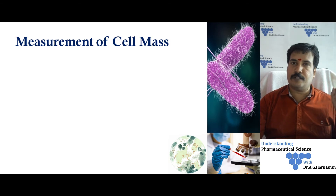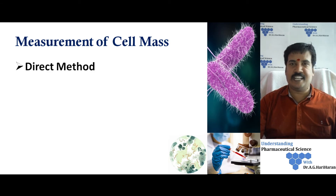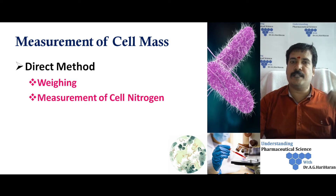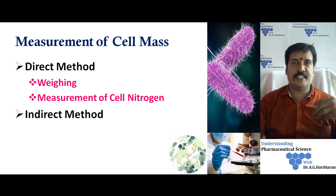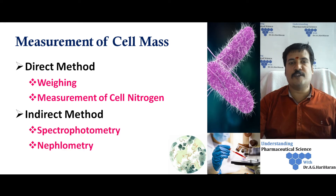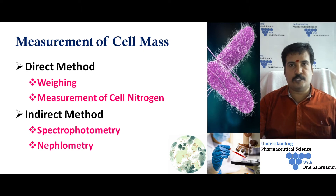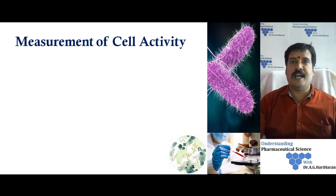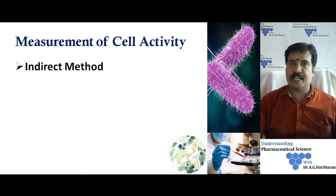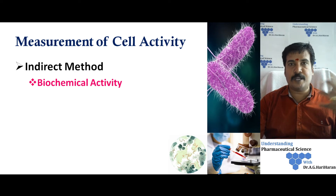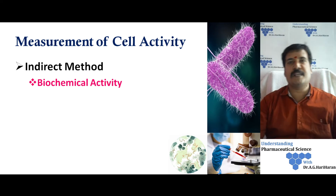The second basic technique is the measurement of cell mass, done by either a direct or indirect method. In the direct method it is done by means of weighing or measurement of cell nitrogen. In the indirect method it is carried out with the help of equipment like a spectrophotometer or nephelometer. The third technique is measurement of cell activity, an indirect method that determines the biochemical activity of the cell, from which the number of cells can be calculated.